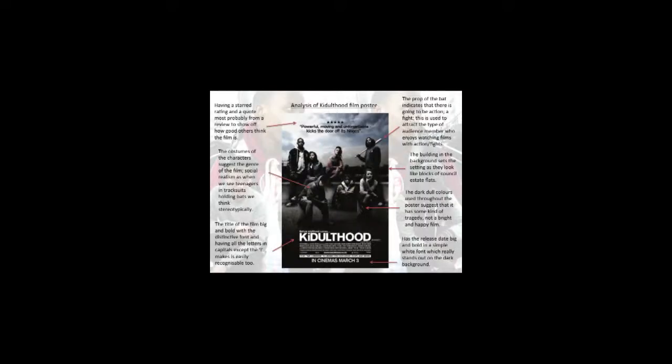To finalise our design, we analysed 'Kidulthood's' film poster to help us design our own. Having a star rating and a quote most probably from a review shows how good others think the film is. The costumes of the characters suggest the genre — social realism — as when we see teenagers in tracksuits holding bats, we think stereotypically. The title of the film is big and bold with a distinctive font, all letters in capitals except the 'i', making it easily recognisable.